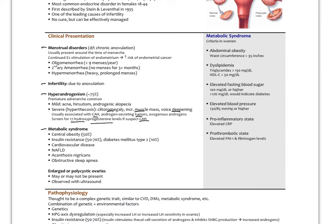Metabolic syndrome is common in up to 70% or more of PCOS cases, involving central obesity with BMI over 30, insulin resistance with type 2 diabetes in about 10% of patients, cardiovascular disease, non-alcoholic fatty liver disease, acanthosis nigricans as a sign of insulin resistance, and obstructive sleep apnea. Criteria for metabolic syndrome in women include abdominal obesity over 35 inches, triglycerides over 150 or HDL under 50, elevated fasting glucose 100 mg/dL or higher, and blood pressure over 130/85, with elevated CRP and prothrombotic states also commonly present.